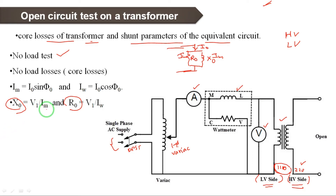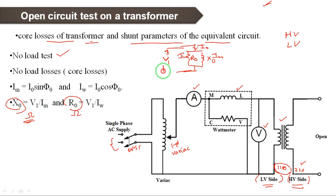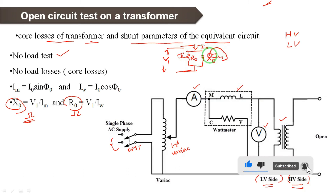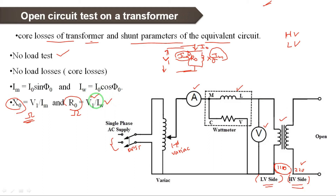The formula is voltage divided by current. X0 is also a reactance in ohms. R0 units are also ohms — V by I. Since R0 and X0 are in parallel, the voltage across both is V1. So R0 equals V1 divided by the working component current IW, and X0 equals V1 divided by the magnetizing current IM. So we find X0 and R0 this way.